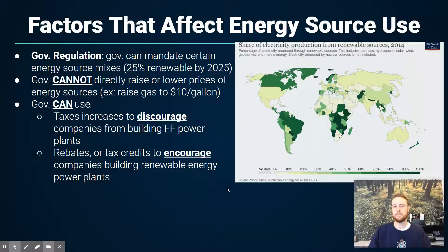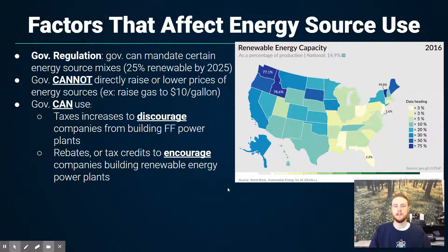Looking at a world map, many nations have different percentages of energy produced from renewable resources, reflecting both their geography and political sentiment around green energy. Similarly, a U.S. map shows states differ dramatically in renewable energy production — West Coast states like Washington, Oregon, Idaho, and California tend to have more progressive energy policies, requiring utilities to source more electricity from renewables, resulting in a shift in energy consumption patterns.